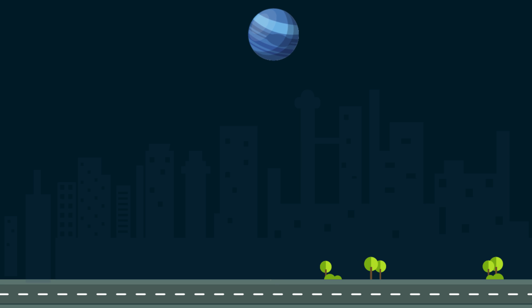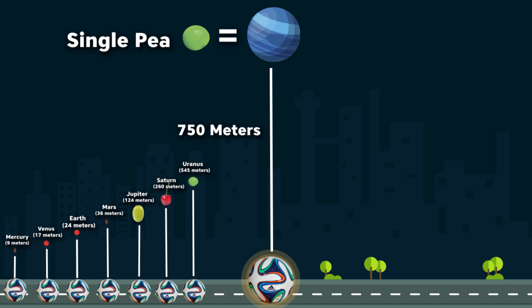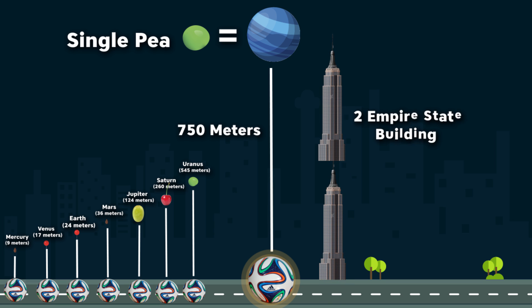And finally Neptune. Neptune is around 750 meters away from the soccer ball sun with the size of a pea. That's almost two Empire State buildings stacked on top of one another. That's how objects in our solar system are so small and far away from one another at the same time.